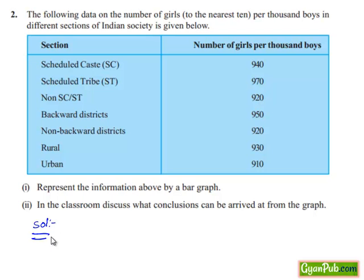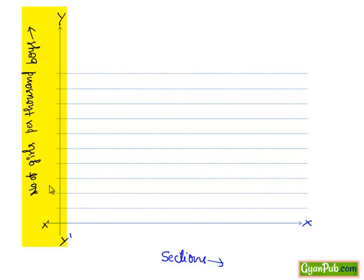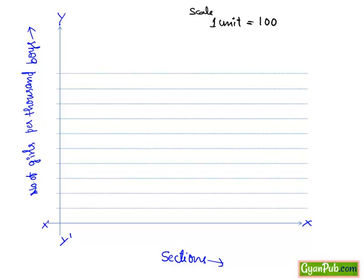Let's take a graph representing sections on the x-axis and number of girls per thousand boys on the y-axis. Considering the scale on the y-axis, one unit is equal to 100. We mark each line with increments of 100 — that is 100, 200, and so on.